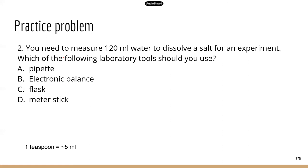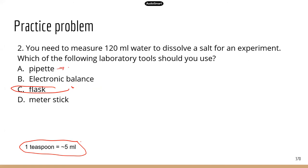Number two: you need to measure 120 mils of water to dissolve a salt for an experiment — which laboratory tool should you use? For reference, one teaspoon is about 5 mils, so 120 mils is a relatively large amount of water. You want to use a volumetric flask to measure that accurately. A pipette is for small amounts like 0.5 or 0.2 mils; for amounts bigger than about 10 mils, use a volumetric flask or graduated cylinder. Option B is for measuring weight and D is for measuring length.